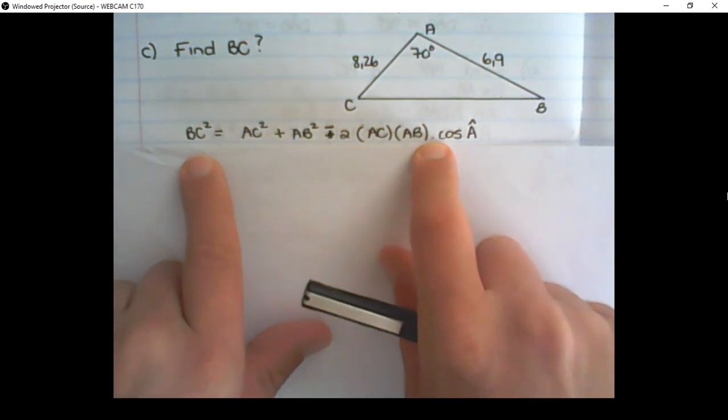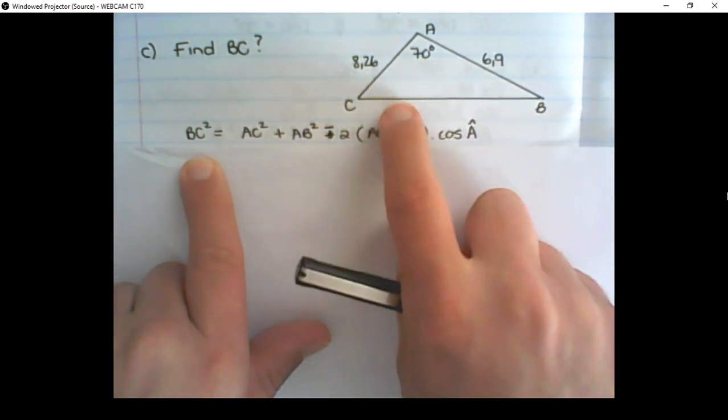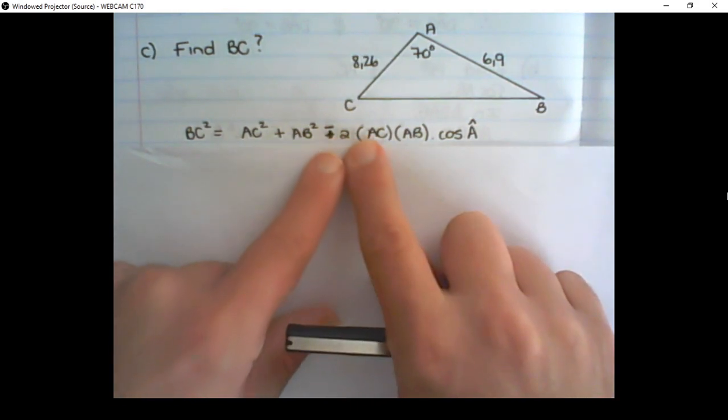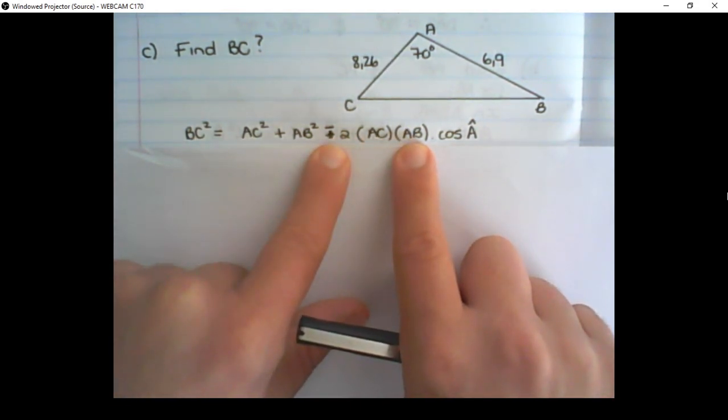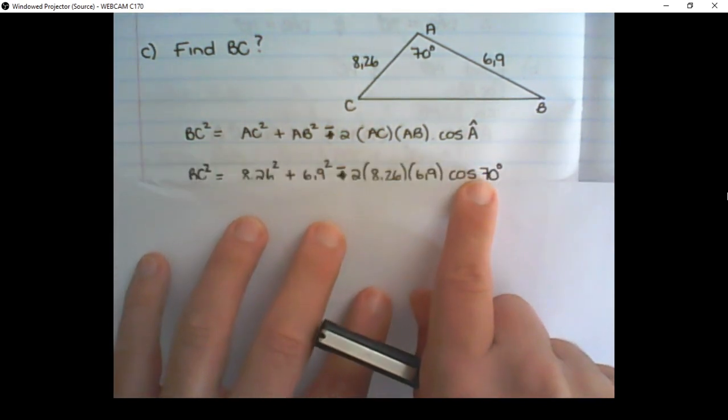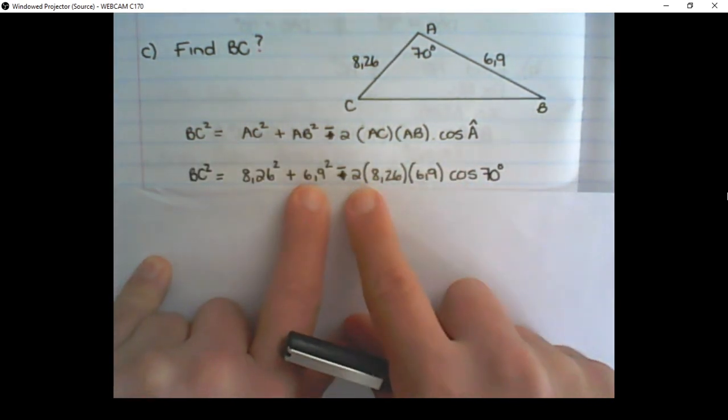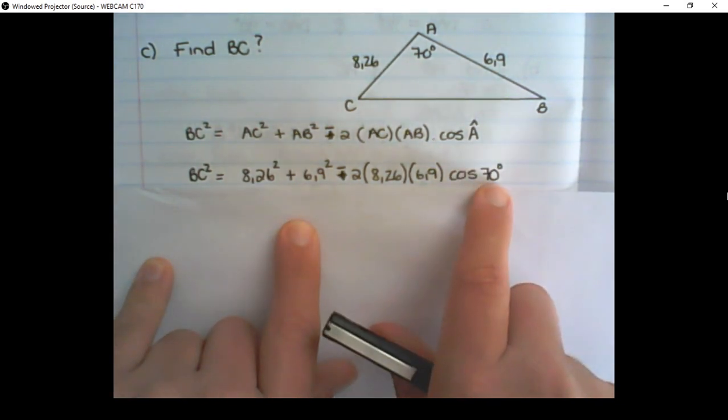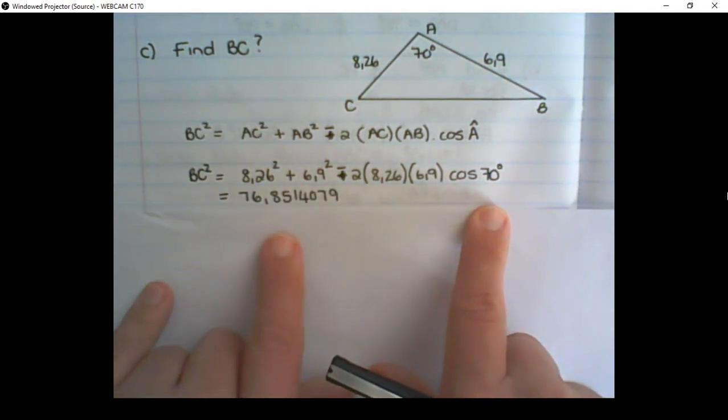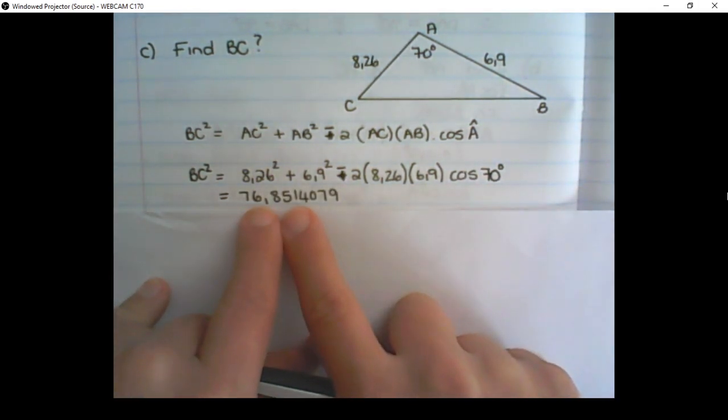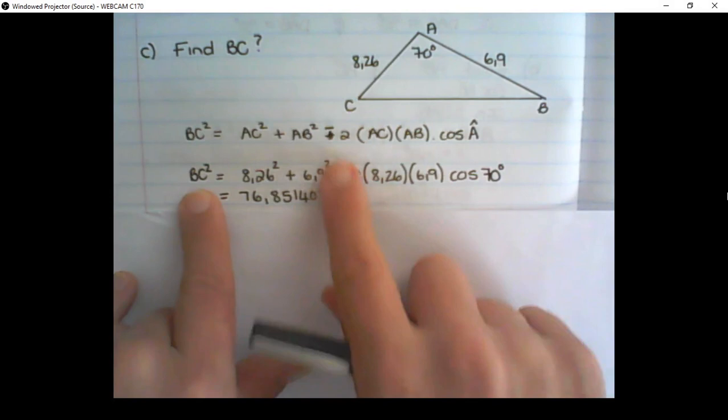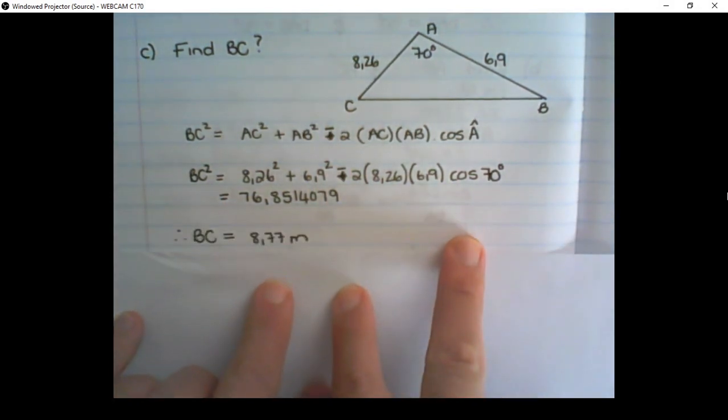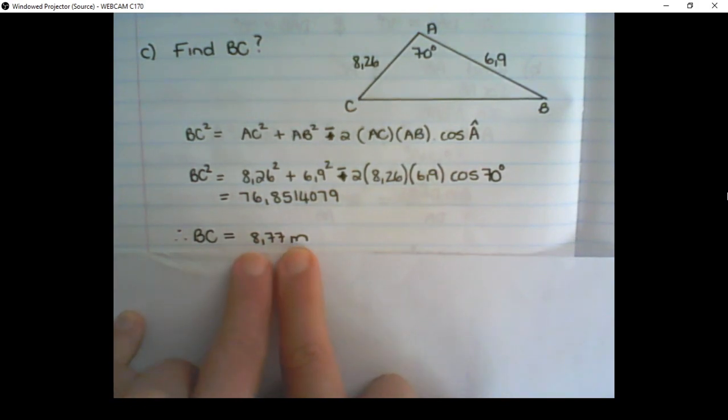So BC square is equals to AC square plus AB square minus, not plus, 2AC times AB times the cos of A. Then I substitute the values in which I have calculated. And that cos of 70, the 70 degrees, is given to me. BC square is 76.8514079. But I need to find the length of BC, so I take the square root of that value. Please remember to round properly. So BC is 8.77 meters.